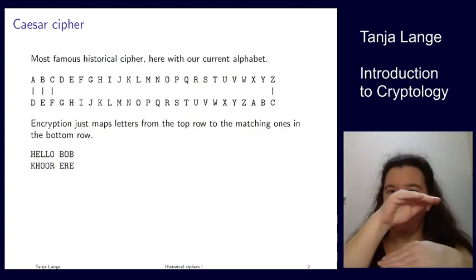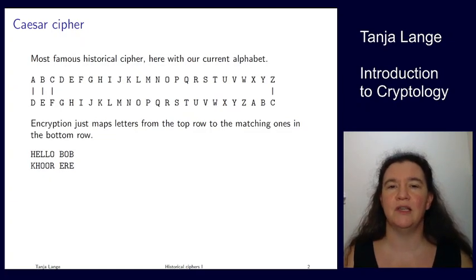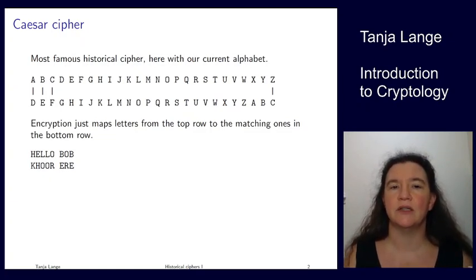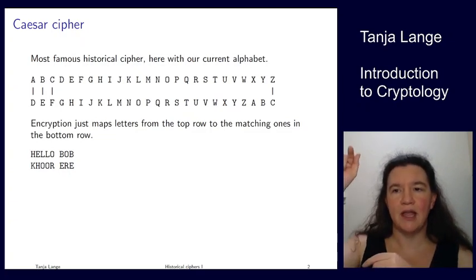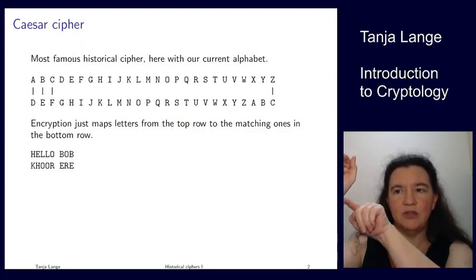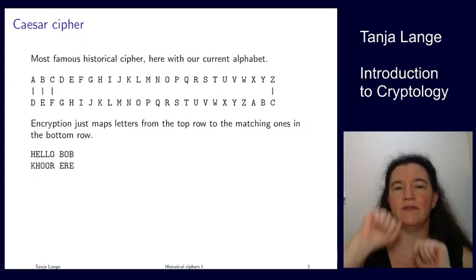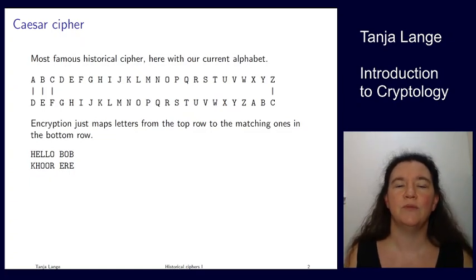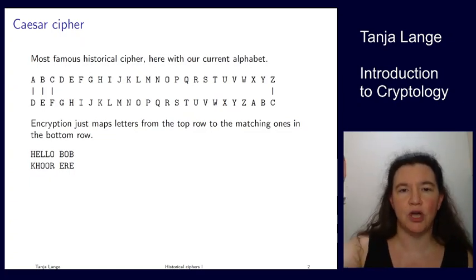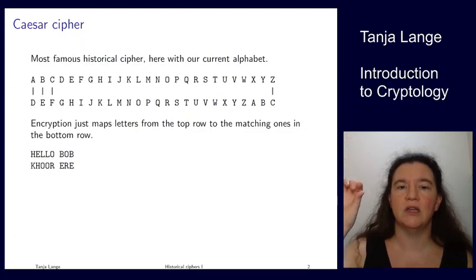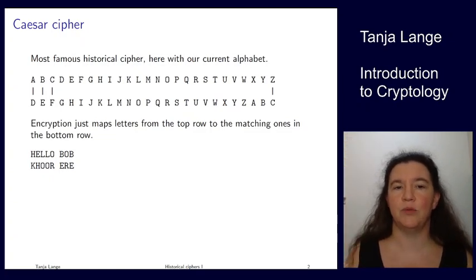I've shown here two rows of the letters in our current alphabet — 26 letters — and he was just shifting them by a few characters, so that A stood over D, B over E, C over F, and so on. Encryption takes the letter in the top row and replaces it with the letter in the bottom row.